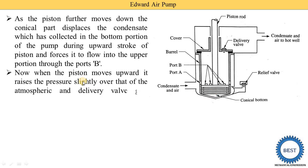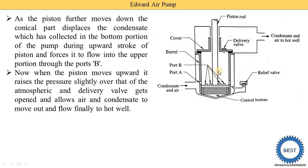When the piston moves upward, it raises the pressure slightly above atmospheric pressure. The delivery valve then opens and allows the air and condensate to move out and flow to the hot well. During the upstroke, condensate and air also enter the bottom part of the piston, and when the piston moves downward again, that air and condensate below the piston moves to the upper part through port B.